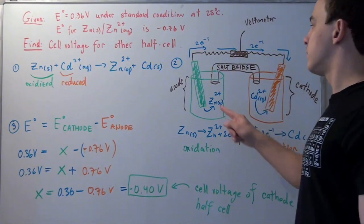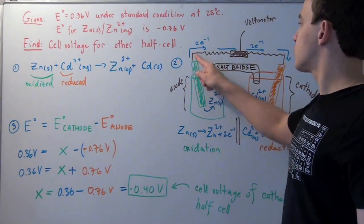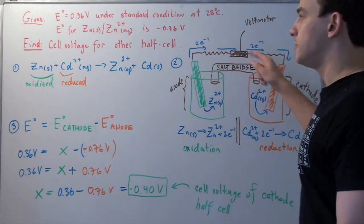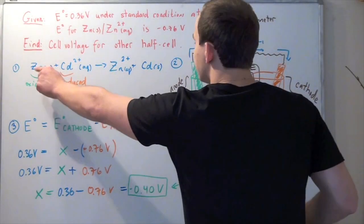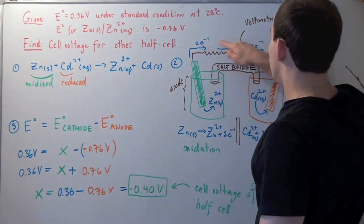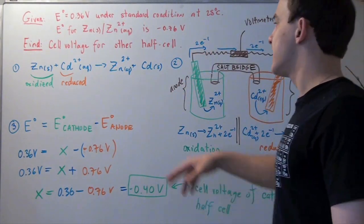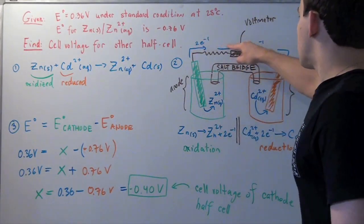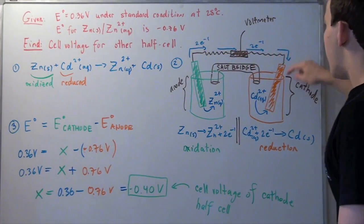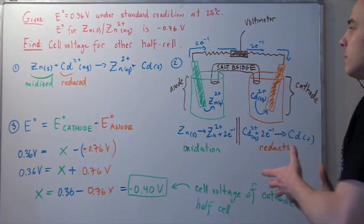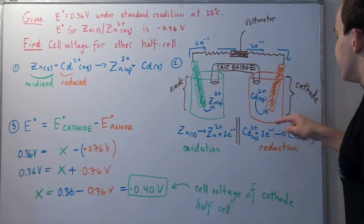Electrons travel from this electrode to this electrode. When they leave this cell, solid zinc releases electrons—electrons begin to flow here. It also releases a zinc ion into this solution. When the electrons travel this way, they combine with the cadmium ions when they reach this metal, forming our cadmium solid.